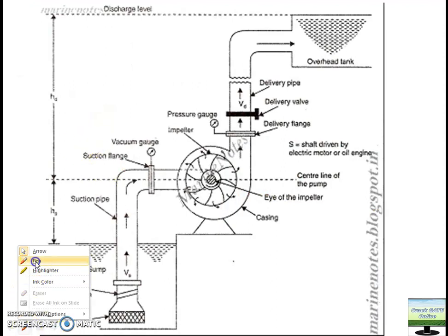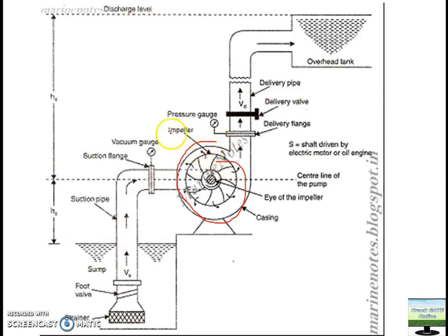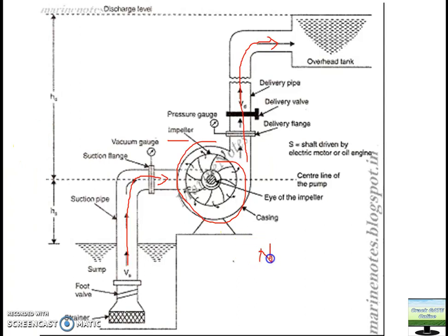Here you can see the centrifugal pump more clearly. This is the pump area where the outer casing is visible, and this is the suction pipe from where the water gets sucked into the pump by the centrifugal force and goes into the outlet.